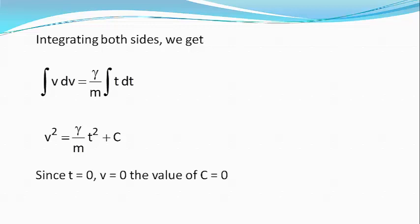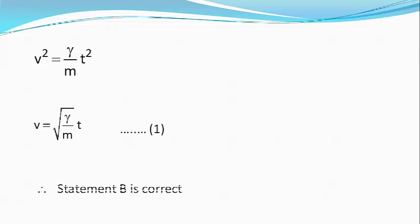Since at t equals 0, v equals 0, we get c equals 0. Therefore, v squared equals gamma/m times t squared, or v equals square root of gamma/m times t. This shows that statement b is correct.